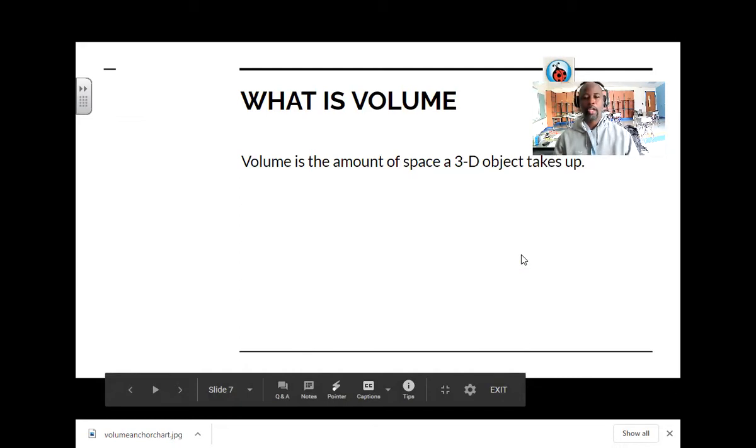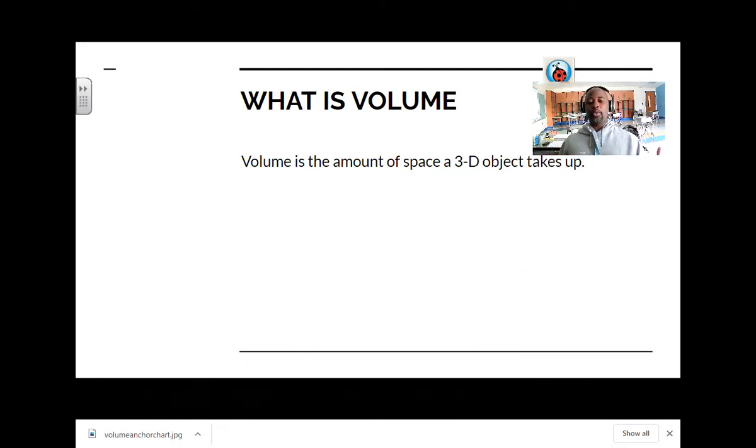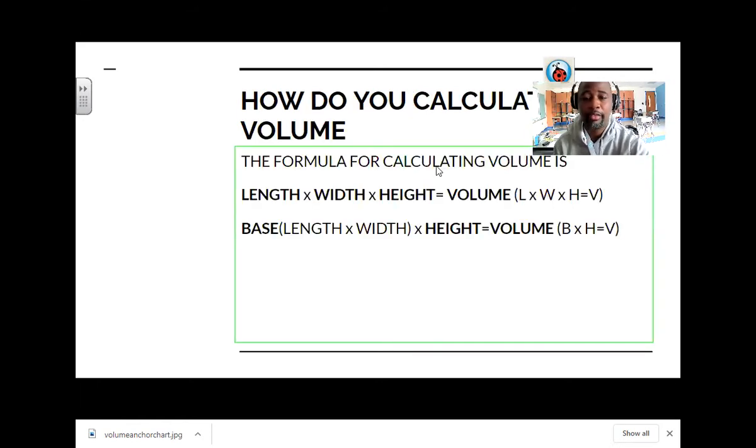So what is volume? Volume is the amount of space a 3D object takes up, like a cube, rectangular prism, things like that. How much space does it take up? How much can it hold? How do you calculate volume? The formula for calculating volume, there's actually 2. We got our length times our width times our height, which is this right here. And then we have our base times our height equals volume. Now your base includes your length and your width together, already calculated together. So length times your width equals your base. In other words, length times width equals area.